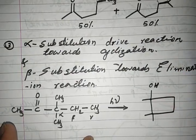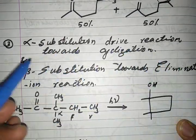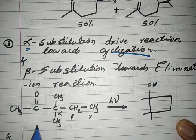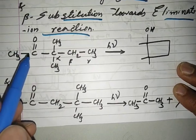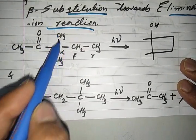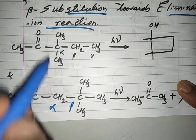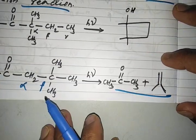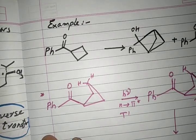One more important characteristic: if the alpha carbon has more substitution, it drives the reaction toward cyclization, forming a cyclobutanol ring. If the beta carbon is more substituted, it drives the reaction toward elimination. So alpha substitution promotes cyclization, while beta substitution promotes elimination.